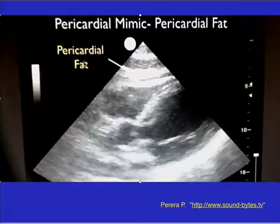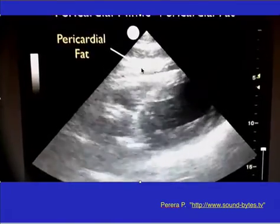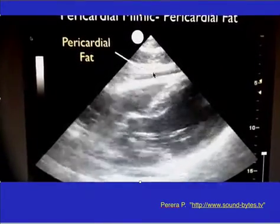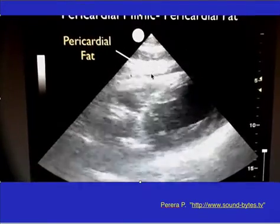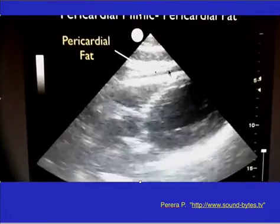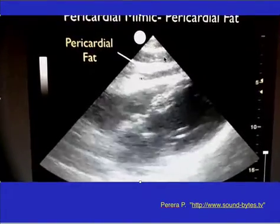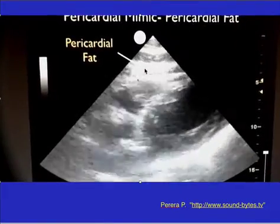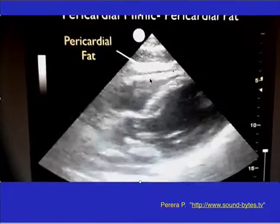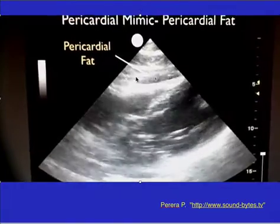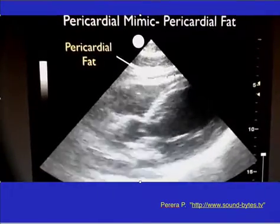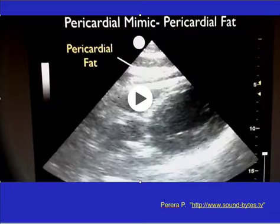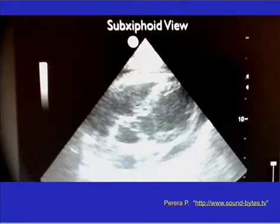Sometimes you can confuse pericardial fat with an effusion. There may be a layer of pericardial fat that could be mistaken for a small pericardial effusion. As you do more of these and as ultrasound machines improve, it becomes easier to make that distinction. For us in the ICU, though, this distinction matters less than whether there is actual tamponade.